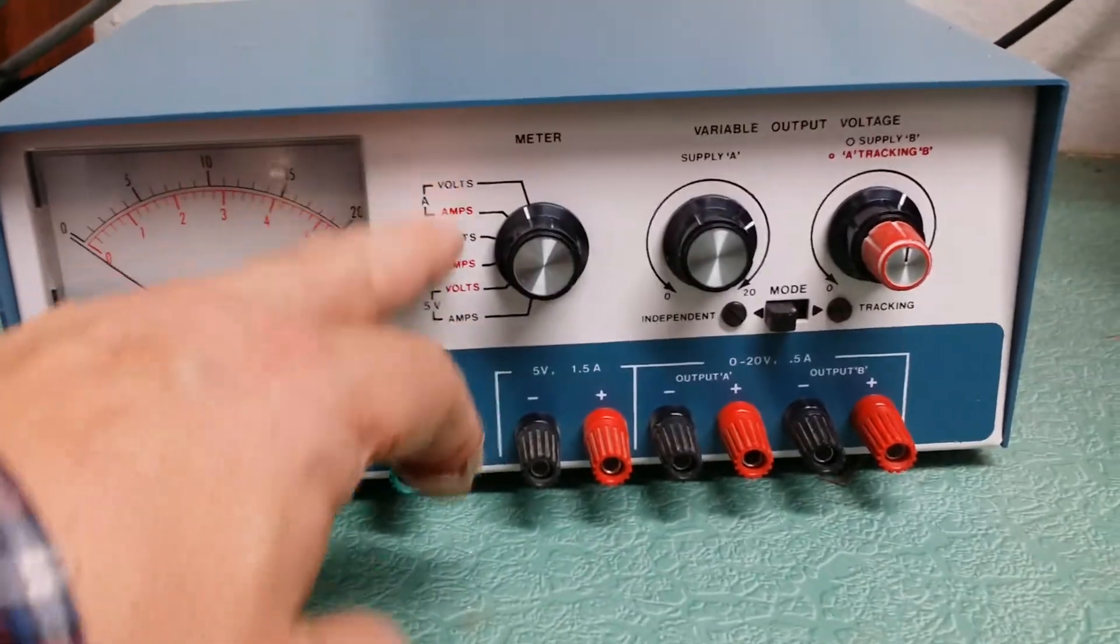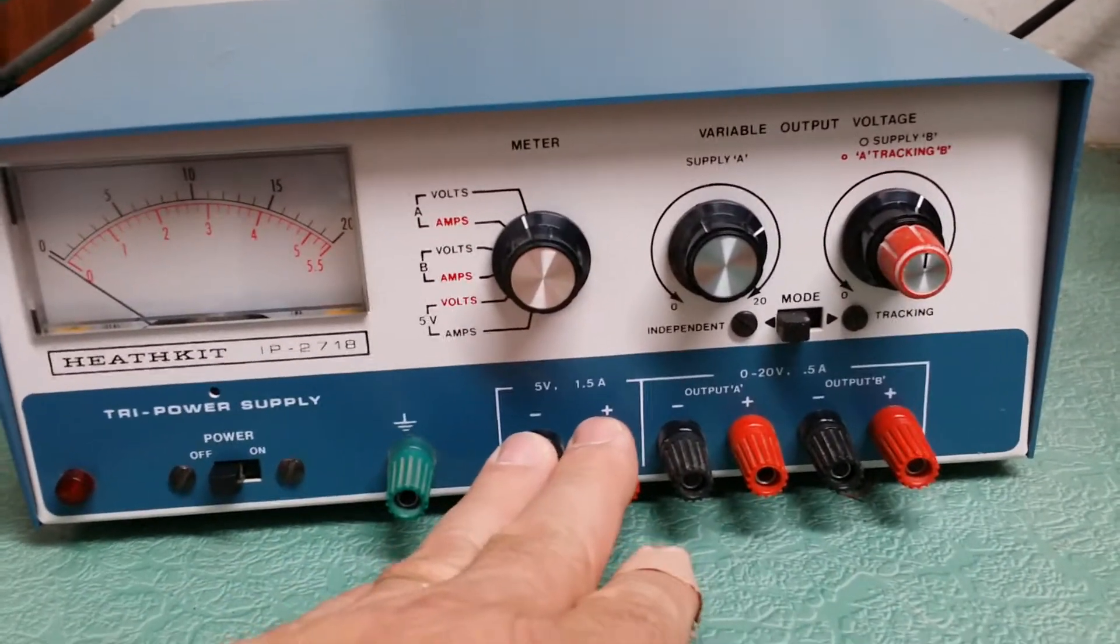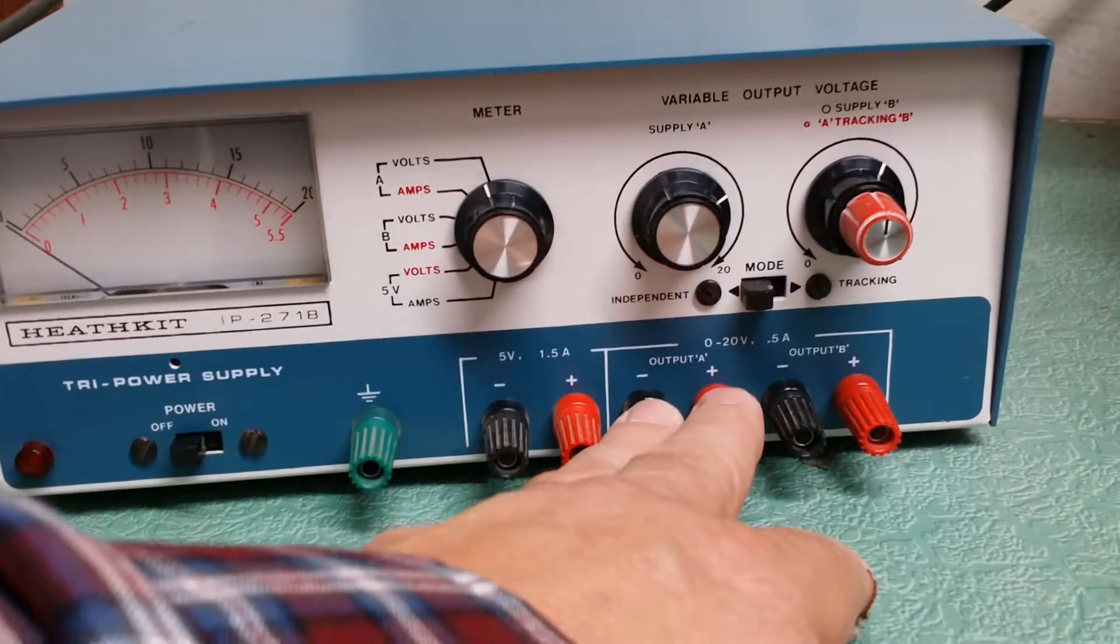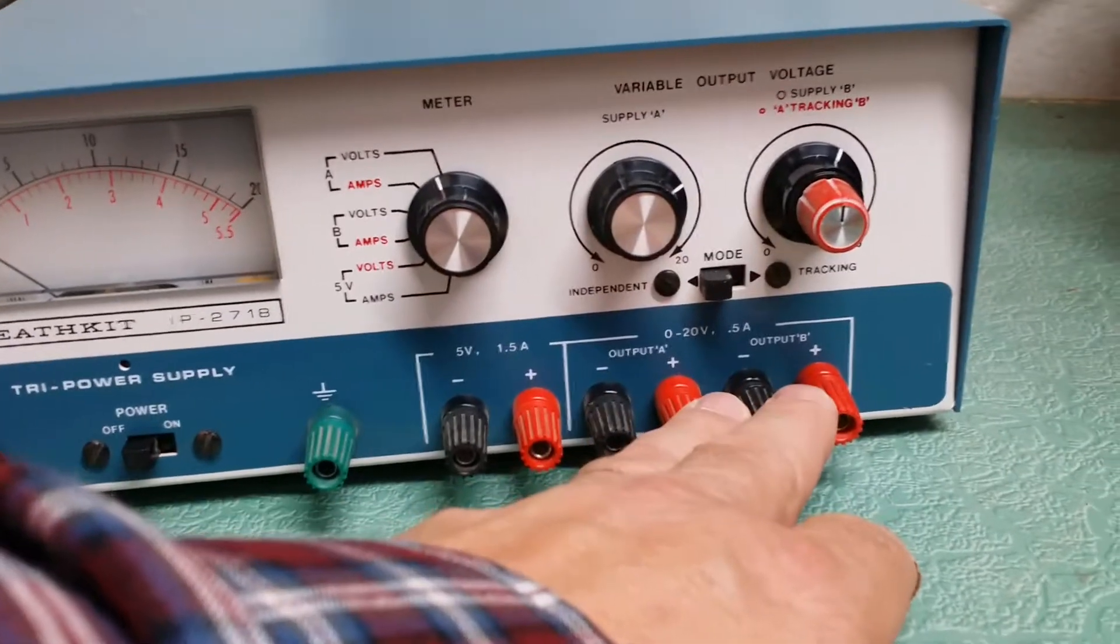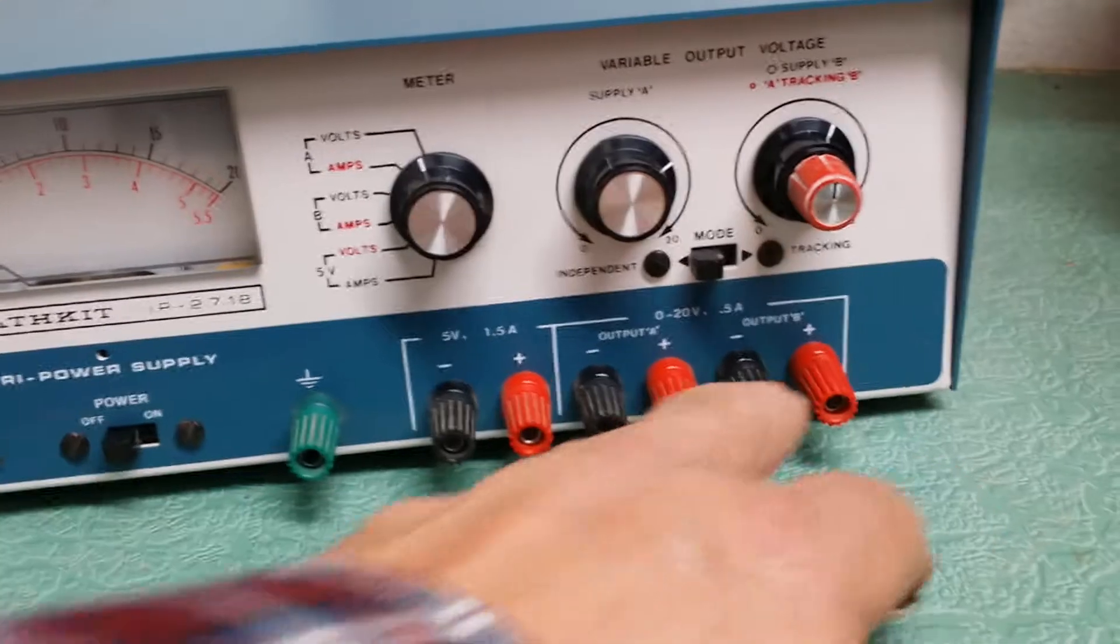You can see it has all kinds of different connections here. You've got the 5 volt at 1.5 amp and you have the variable 0 to 20 volt at 0.5 amp with the two different outputs. You've got the A output and the B output here.